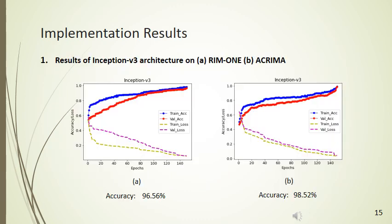Looking at the implementation results of each CNN architecture, the training accuracy, validation accuracy, training loss, and validation loss for each architecture and dataset are shown here. We trained both datasets for 150 epochs. It is observable that as the number of epochs increases, model performance improves and leads to high accuracy while avoiding overfitting. Inception V3 on the RIM1 dataset yielded 96.56% accuracy, and on the ACRIMA dataset yielded 98.52% accuracy, with no clear signs of overfitting.